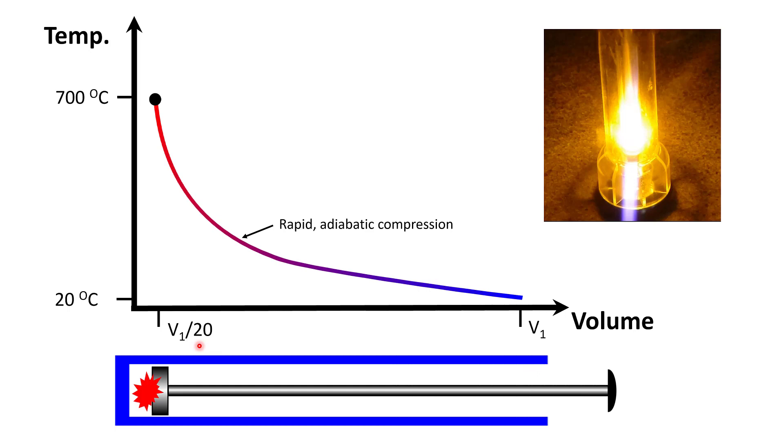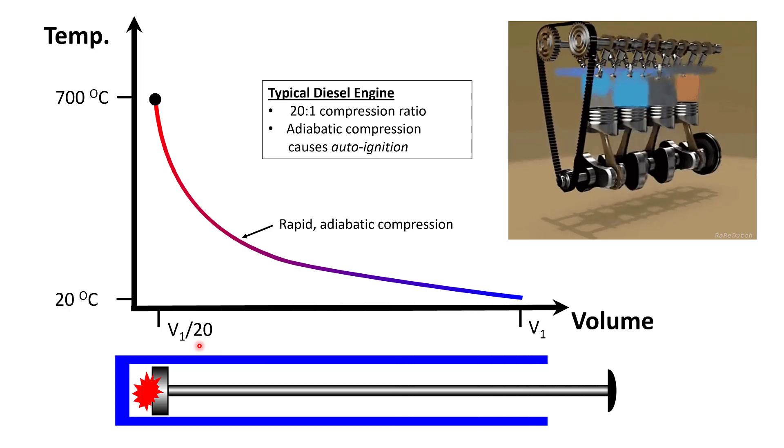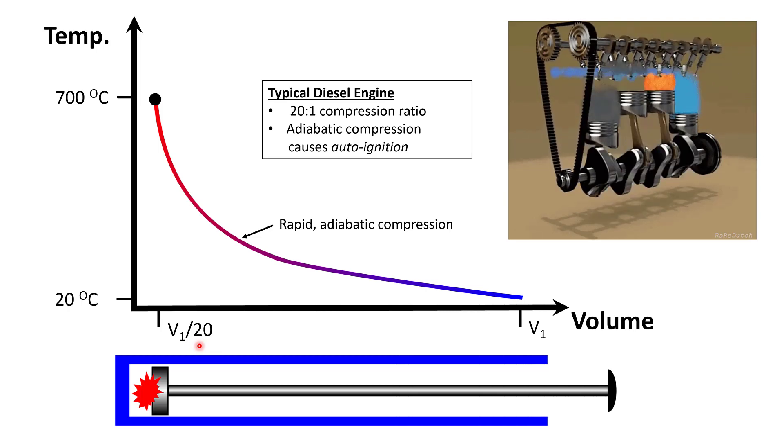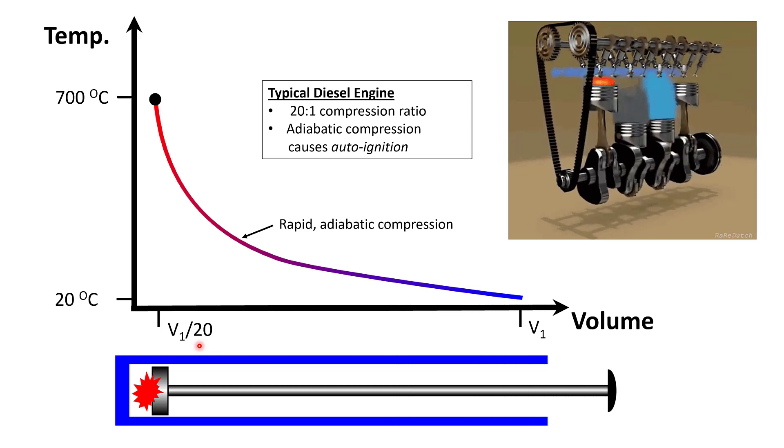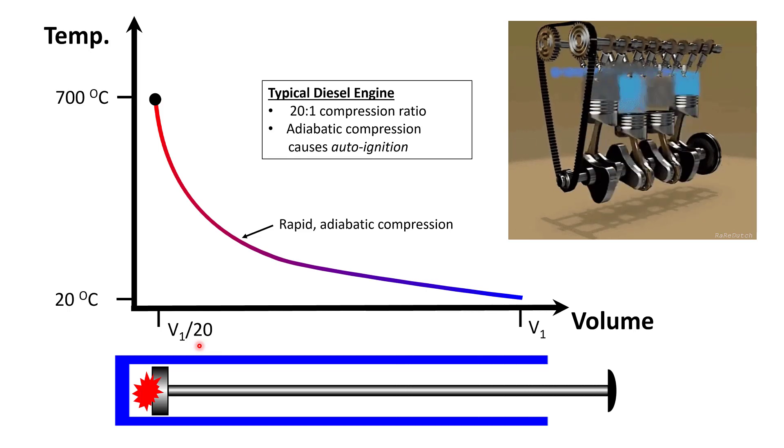Amazingly, if you have perfect adiabatic compression, the air temperature rises to almost 700 degrees Celsius, well above the auto ignition temperature of the paper. As I mentioned, this is what happens in diesel engines, which typically have a compression ratio of about 20 to 1. Near adiabatic compression in the cylinder ignites the fuel without the need for a spark plug.